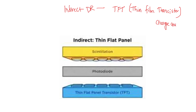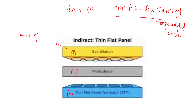The thin film transistor system consists of three layers. The first layer is a scintillation layer, the second layer is a photo diode, and the third layer is a thin flat panel transistor. The scintillation layer mainly converts x-ray photons to light. For this conversion, the scintillator layer uses cesium iodide.